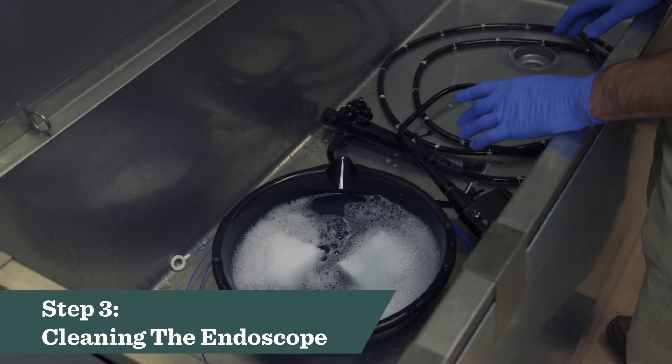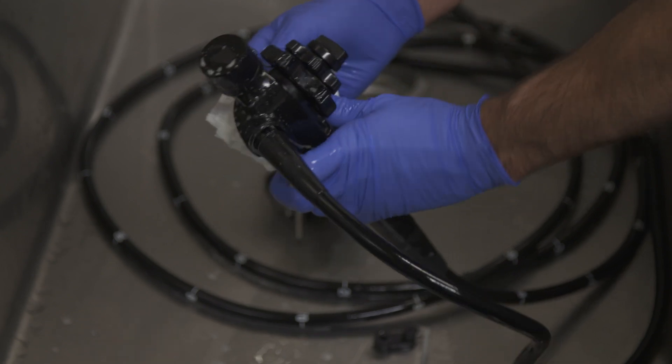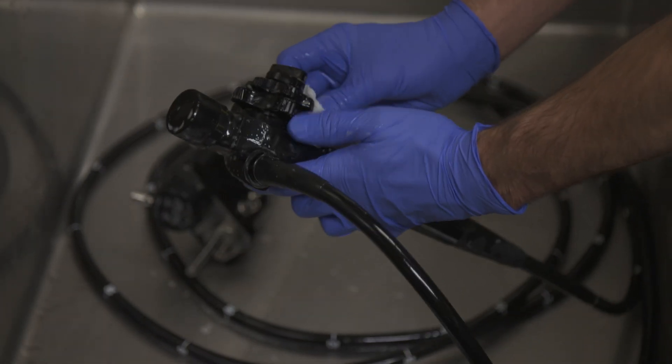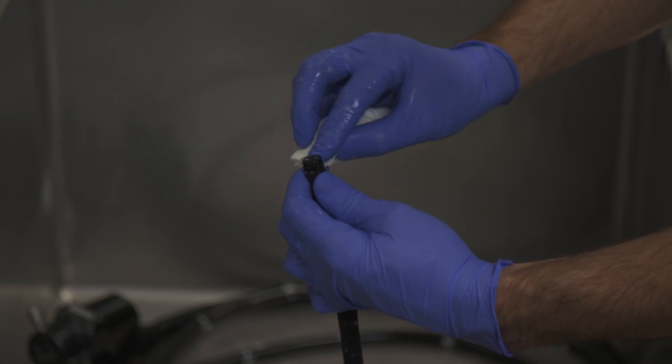The next step is to clean the external surface of the scope using a mild detergent solution. Once the outside of the scope is cleaned,